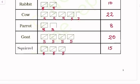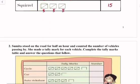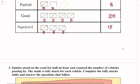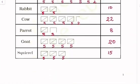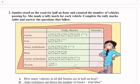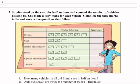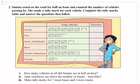Question Number 2. Sumita stood on the road for half an hour and counted the number of vehicles passing by. She made a tally mark for each vehicle. Complete the tally marks table and answer the questions that follow. So first of all we will write the number.